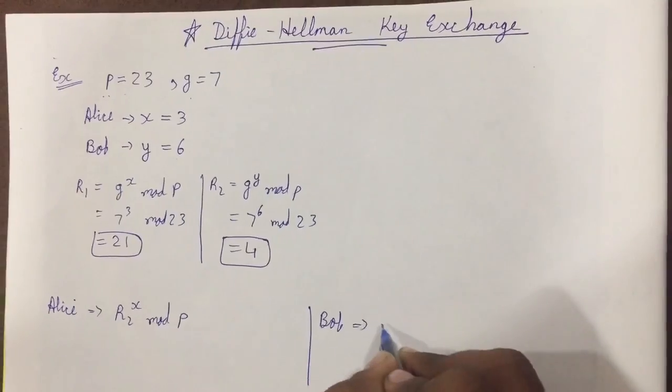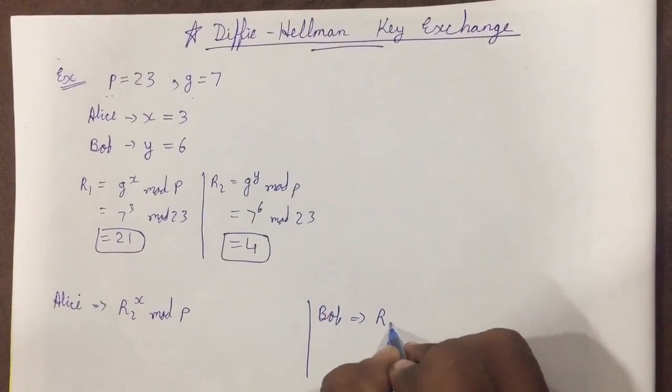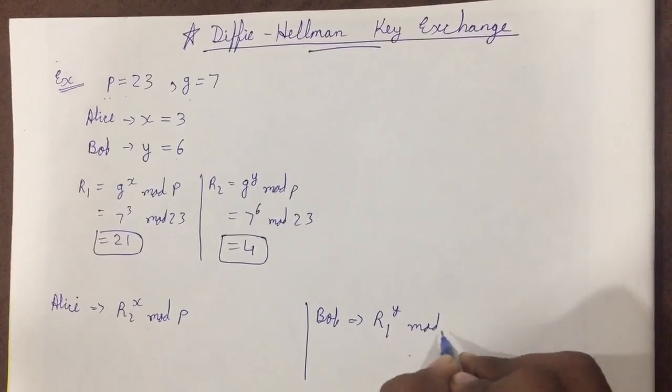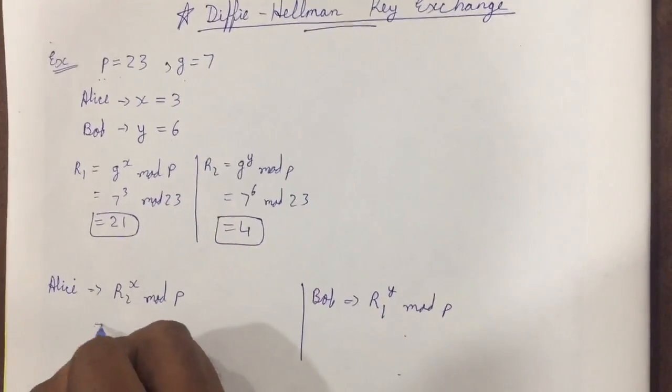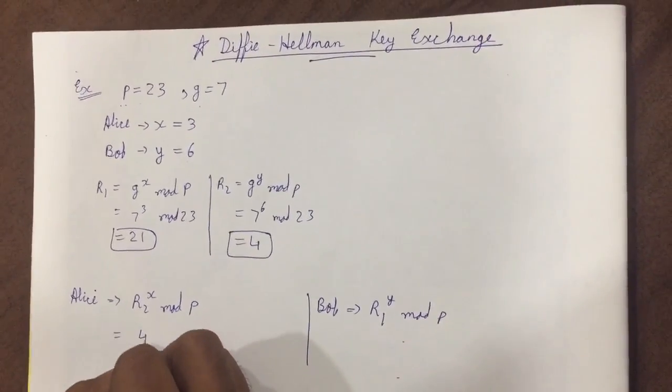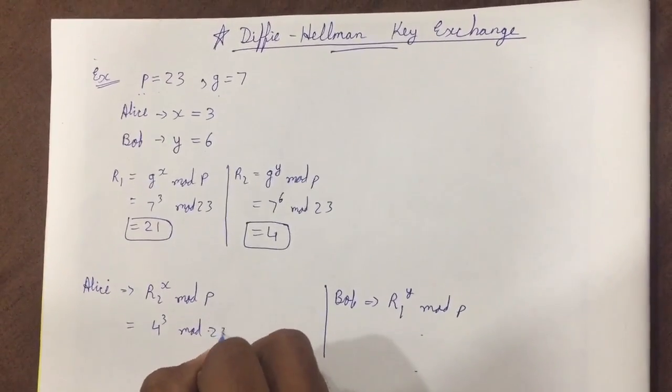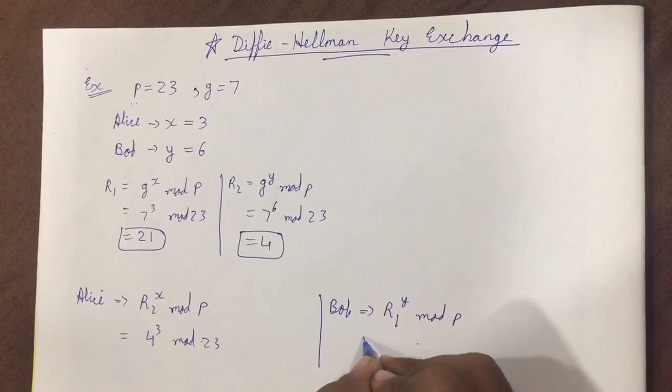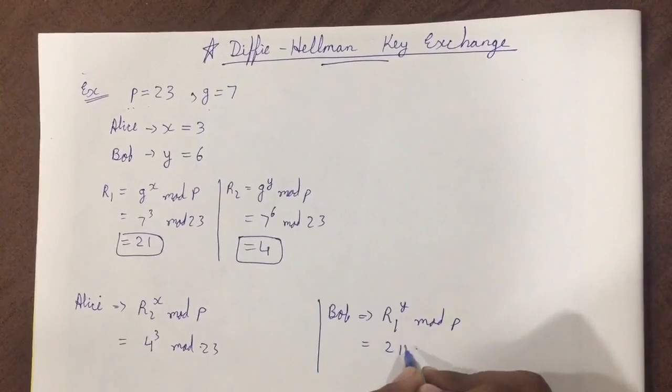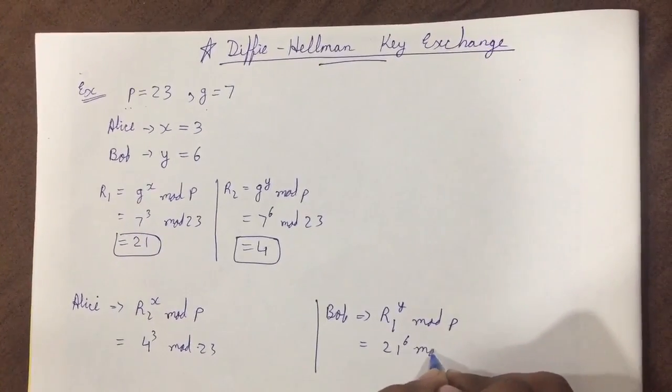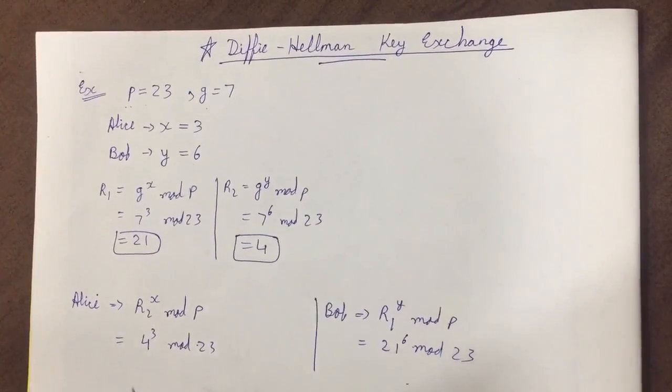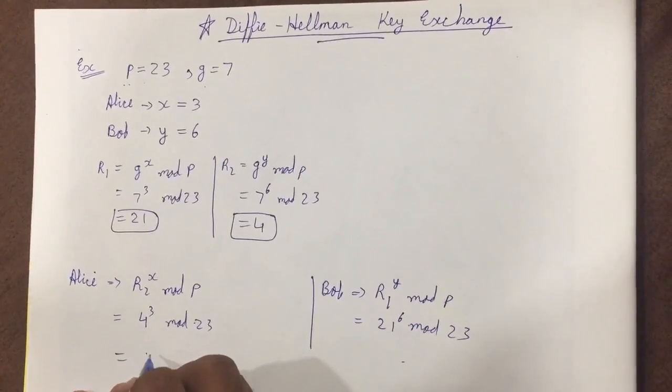So what is R2 value? 4 raise to 3 mod 23. And here it will be equal to 21 raise to 6 mod 23. So answer over here will be 18.